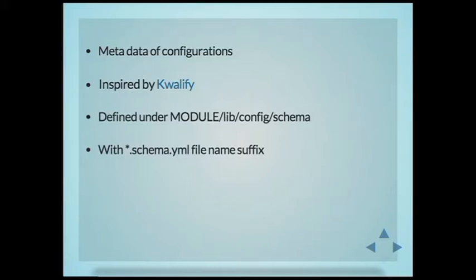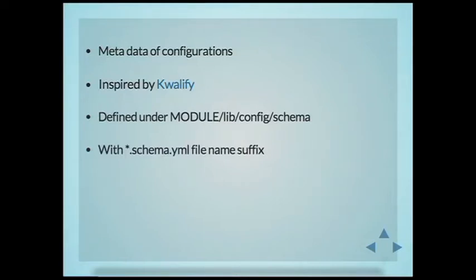In Drupal 7, we didn't really distinguish between configuration and content. Configuration examples include variables, views, content types — all these things are configurations. Another way to think about it: if you used the Features module, you know what configuration is — most of the things you can export as a Feature is configuration. In Drupal 8, instead of saving everything in the database, we started doing it in YAML files — each piece of configuration saved in a separate file.